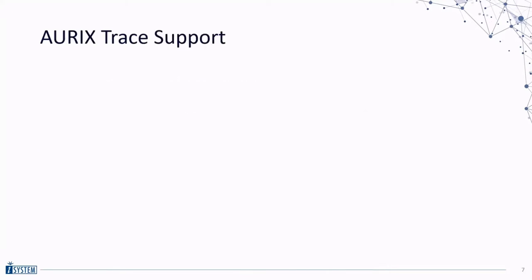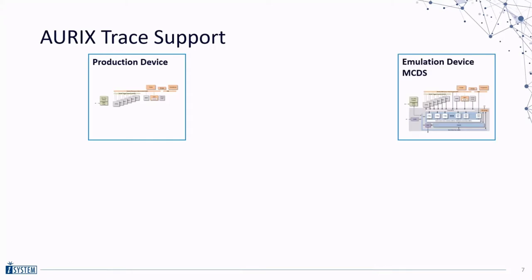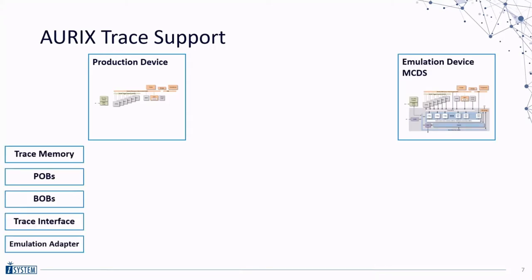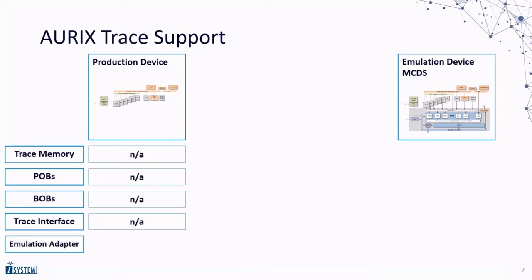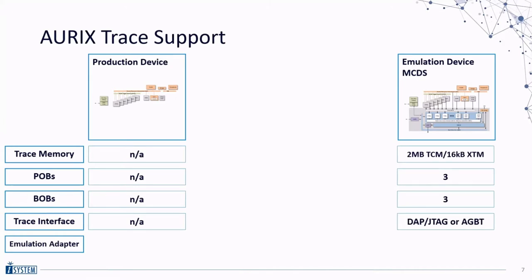Let's start by reviewing the Aurix trace architecture. Not all Aurix derivatives are created equal. Infineon differentiates between production devices and emulation devices. Production devices do not have any trace capabilities whatsoever. On the other hand, emulation devices contain the so-called Multi-Core Debug Solution, MCDS. The MCDS provides all the bells and whistles for tracing: three processor observation blocks, three bus observation blocks, plenty of trace memory, and trace support via the regular DAP or JTAG debug port as well as the high-speed serial AGBT interface.